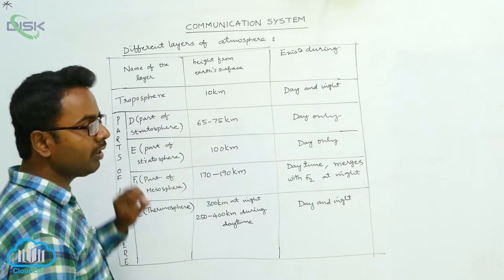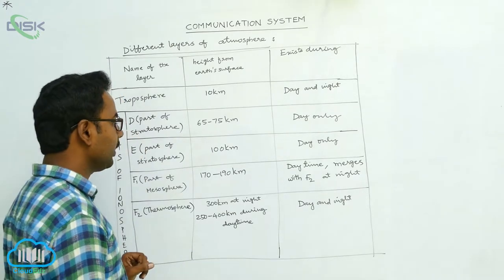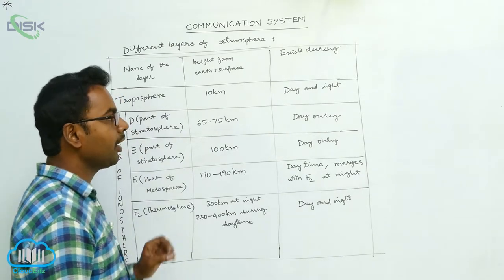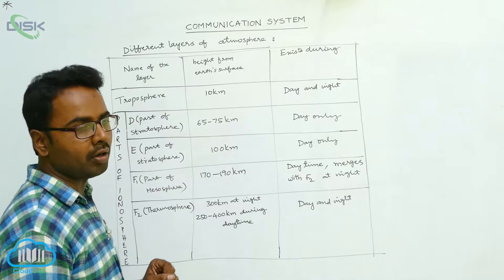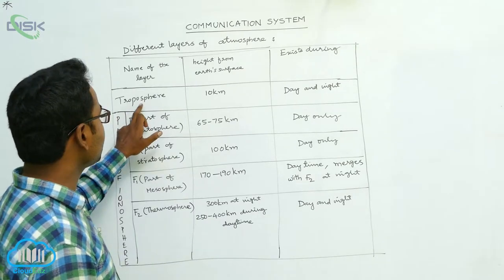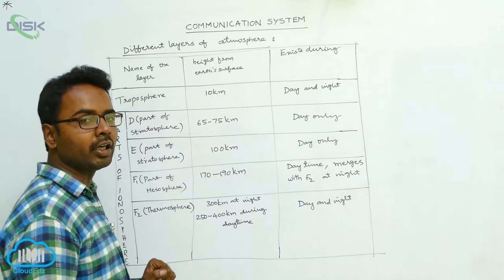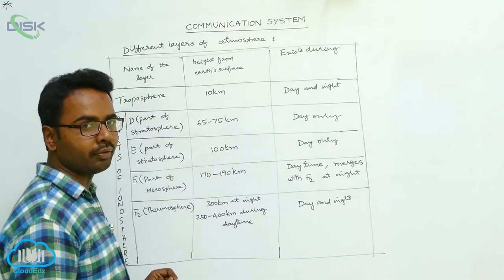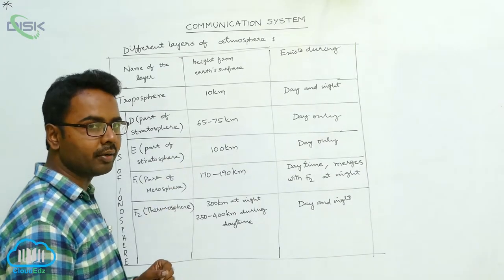Let's see at what heights these layers exist in the atmosphere and at what time they are present. Troposphere is at a height of 10 km from the Earth's surface and it exists day and night.